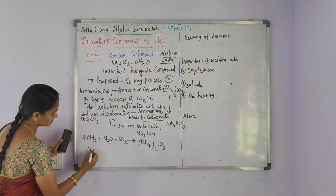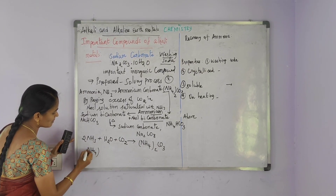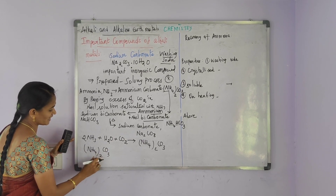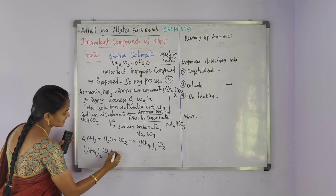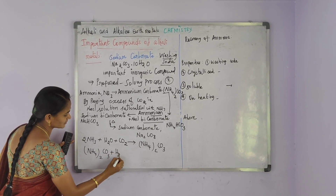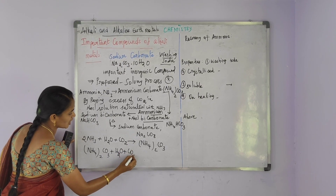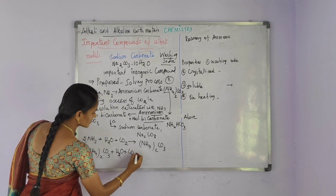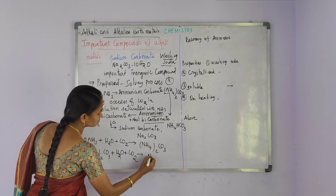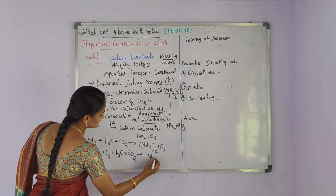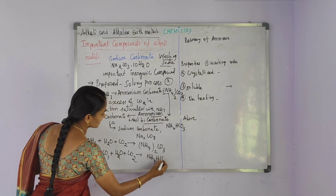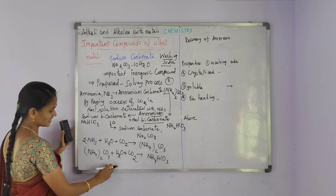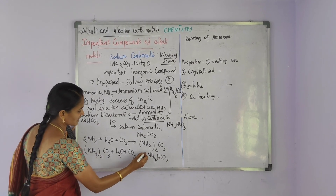Step 2: Ammonium carbonate, (NH4)2CO3, is treated with water and carbon dioxide. It forms ammonium bicarbonate, NH4HCO3. Balancing the equation, we place a coefficient of 2.